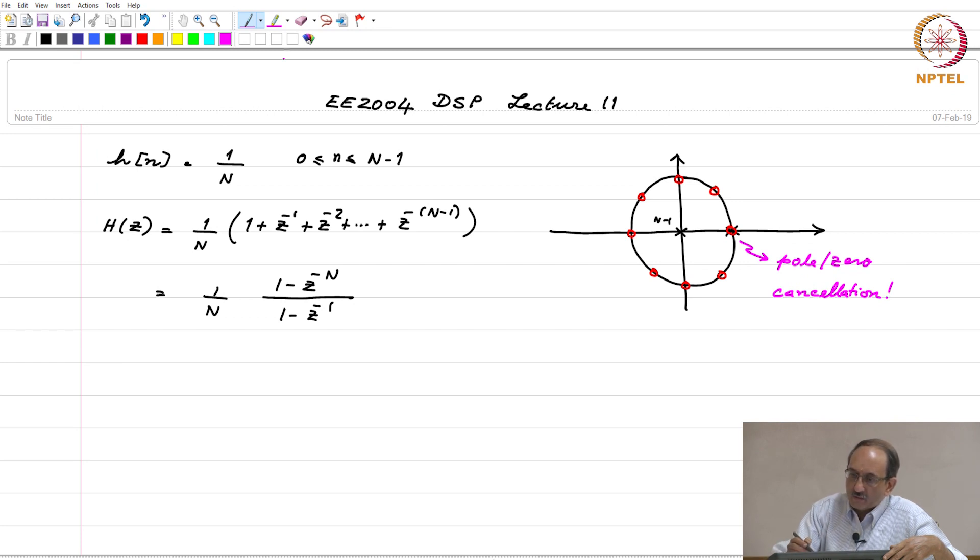Whereas, the system given here is indeed FIR. In this form, a pole appears at z equal to 1; it has to necessarily get eventually cancelled.